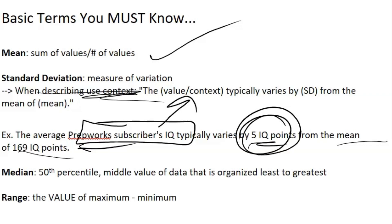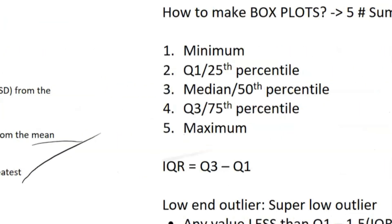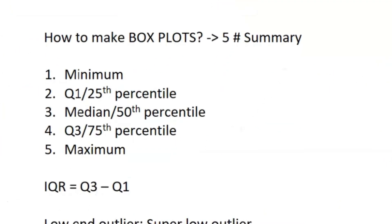The median is just the 50th percentile. So that's where if you have data, you organize it from least to greatest and then look at the value in between. You've probably heard of that. And range is just the value, not the interval, the value of max minus min in your data set.